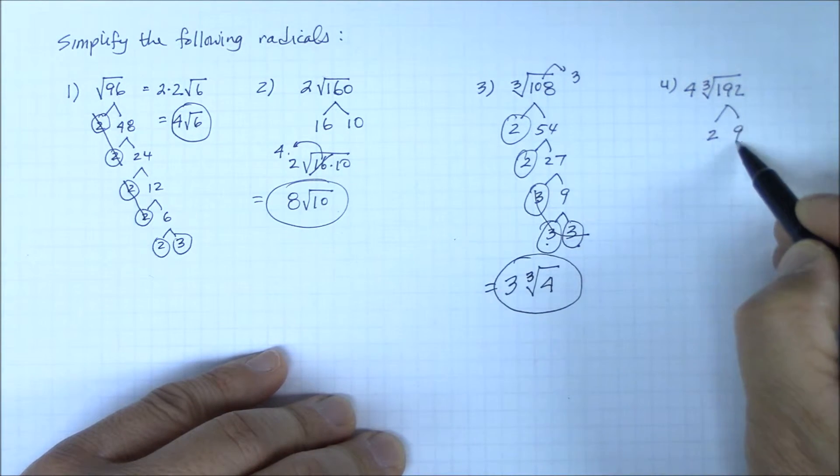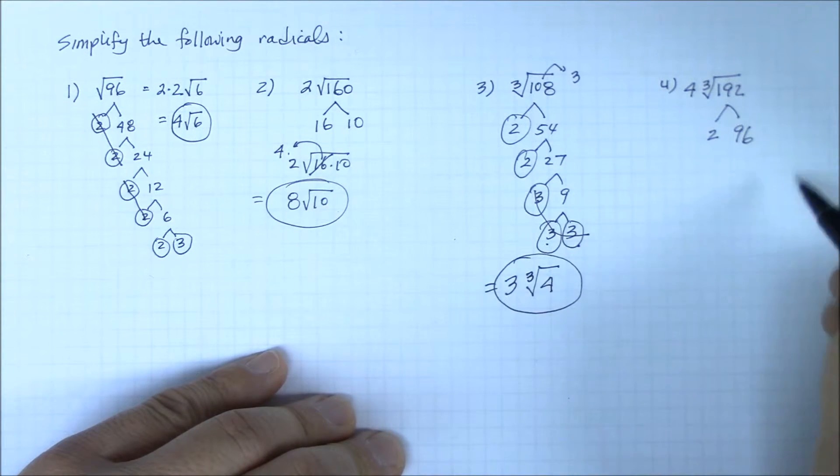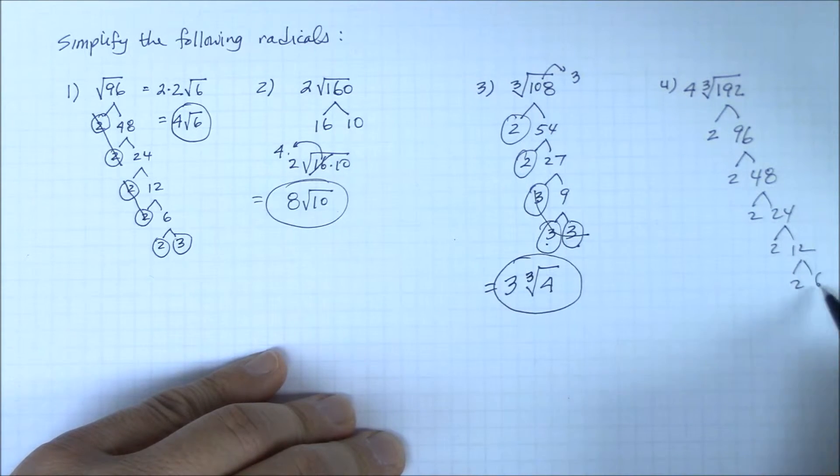2 times 96 is 192. 96 is 2 times 48, 48 is 2 times 24, 24 is 2 times 12, 12 is 2 times 6, and 6 is 2 times 3. And you stop.